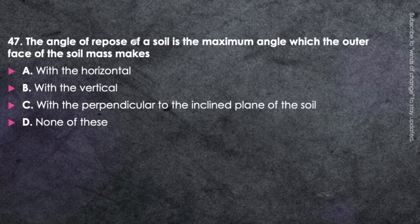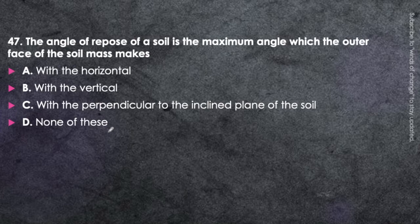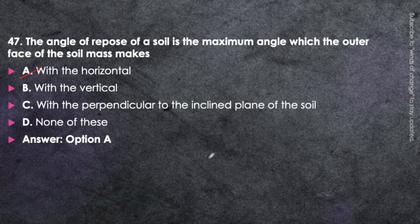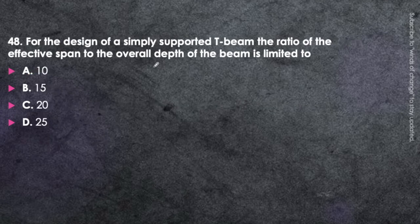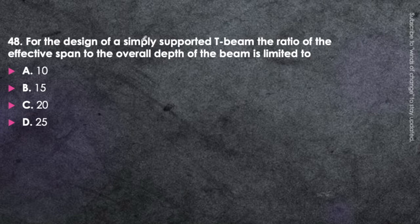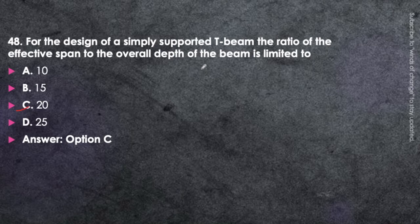Next question: The angle of repose of a soil is the maximum angle that the outer face of the soil mass makes with the horizontal — option A, a very easy question. Next question: For the design of simply supported T-beams, the ratio of effective span to overall depth is limited to 20 — option C. For a cantilever beam, this ratio is 7.